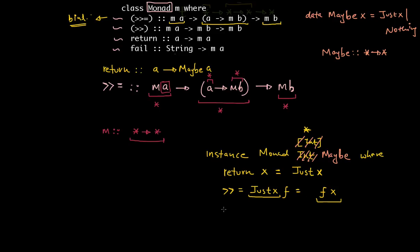And likewise, just to complete the pattern matching entirely: if the Maybe A value happens to be Nothing, then the output is also Nothing.